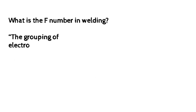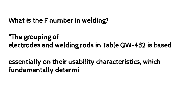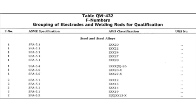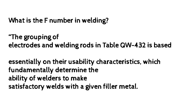What is the F number in welding? The grouping of electrodes and welding rods in table QW-432 is based essentially on their usability characteristics, which fundamentally determine the ability of welders to make satisfactory welds with a given filler metal.